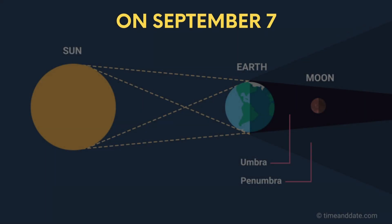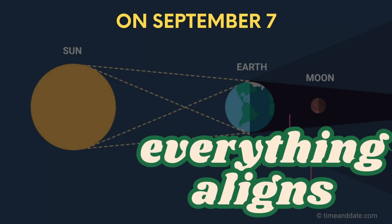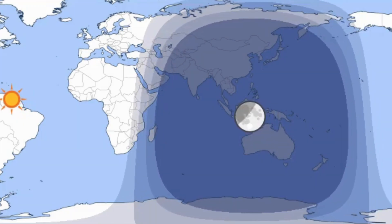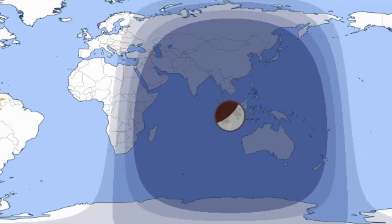On September 7th, everything aligns. The eclipse will be visible across Australia, Asia, Africa and Europe, but not the Americas.